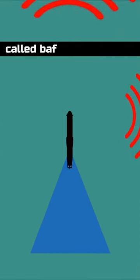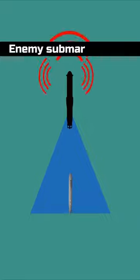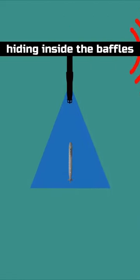A blind spot called baffles is created at the back of the submarine. Enemy submarines can follow another by hiding inside the baffles.